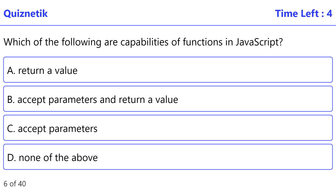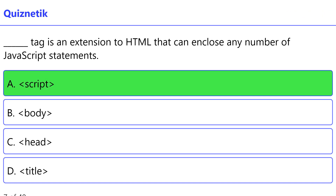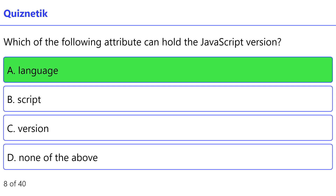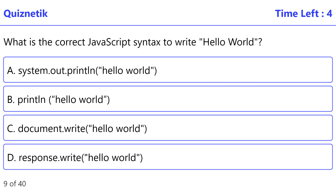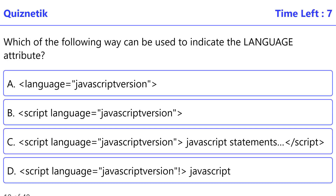Which of the following are capabilities of functions in JavaScript? Correct option is C: accept parameters. The script tag is an extension to HTML that can enclose any number of JavaScript statements. Correct option is A: script. Which of the following attributes can hold the JavaScript version? Correct option is A: language. What is the correct JavaScript syntax to write 'Hello World'? Correct option is C: document.write('Hello World').